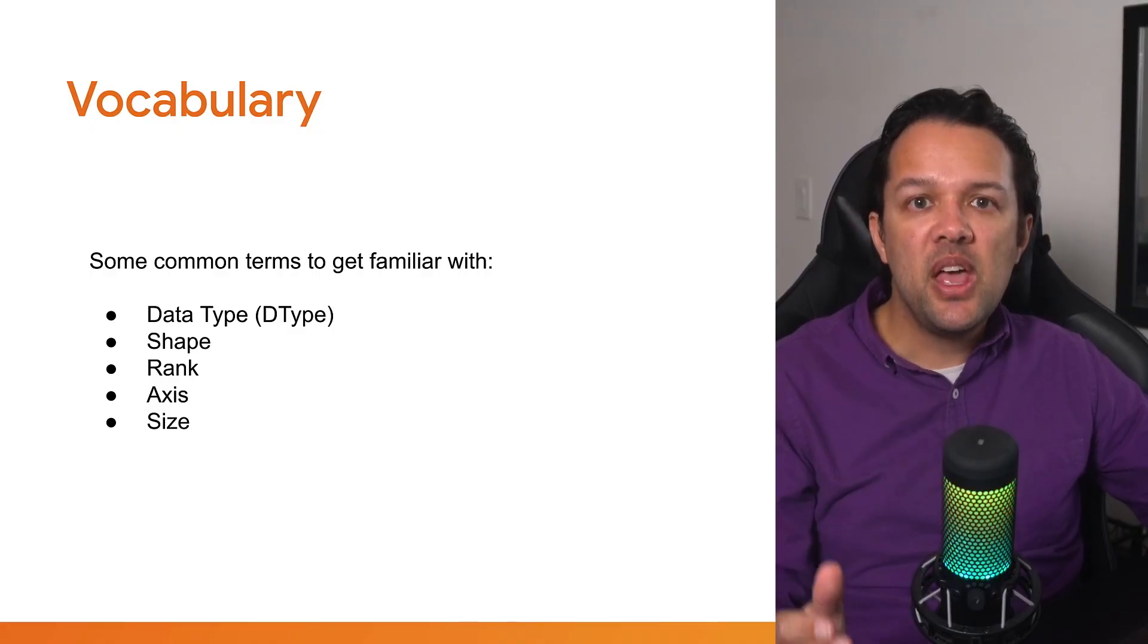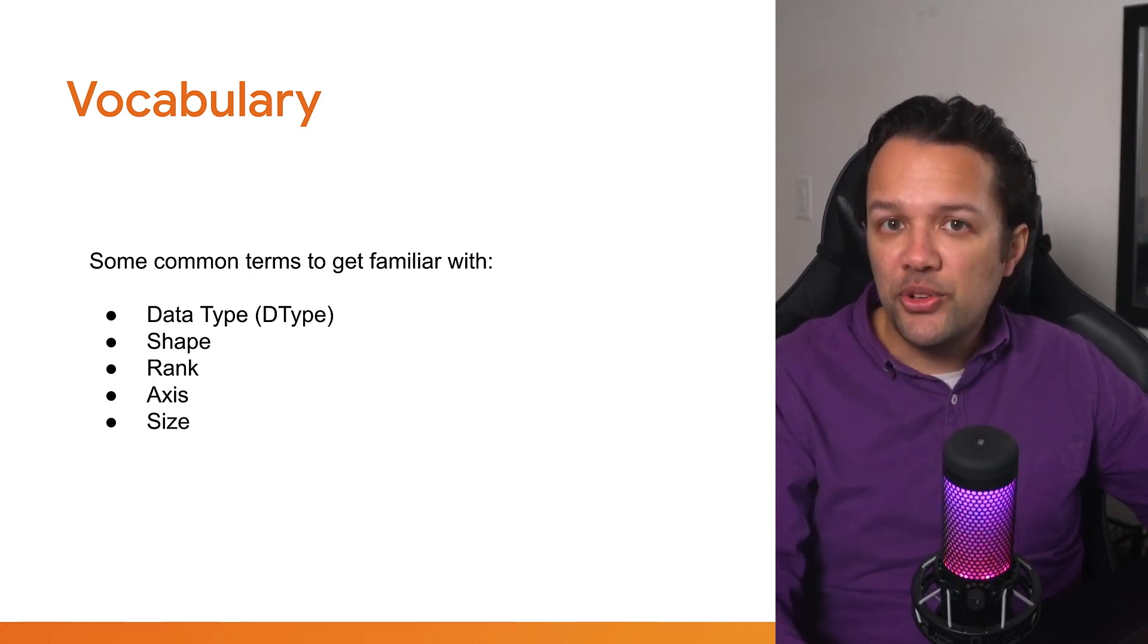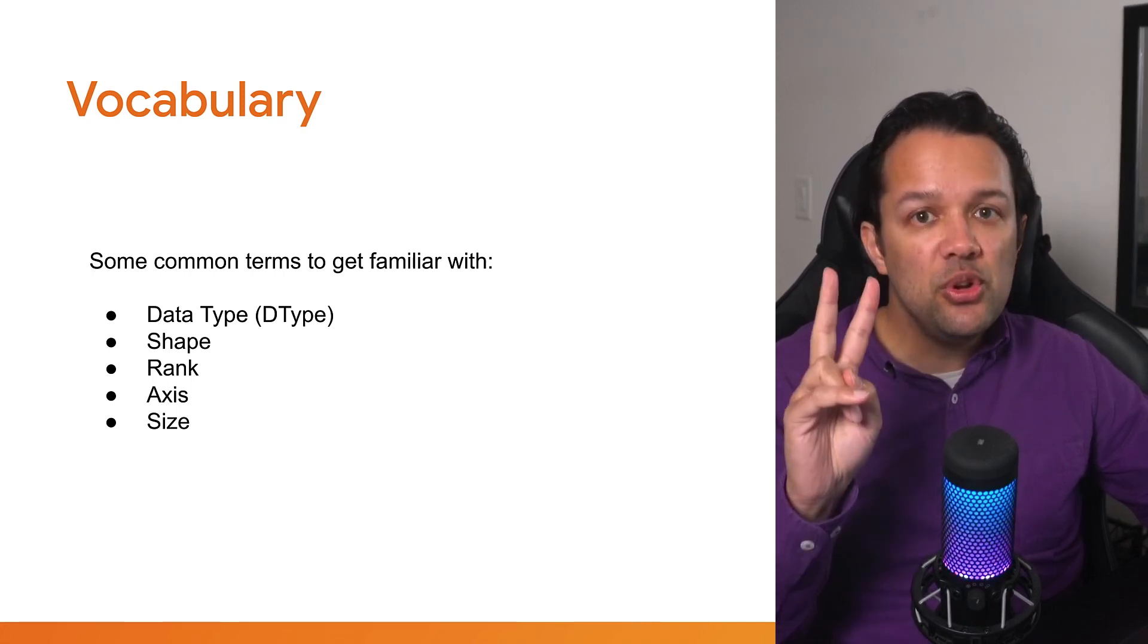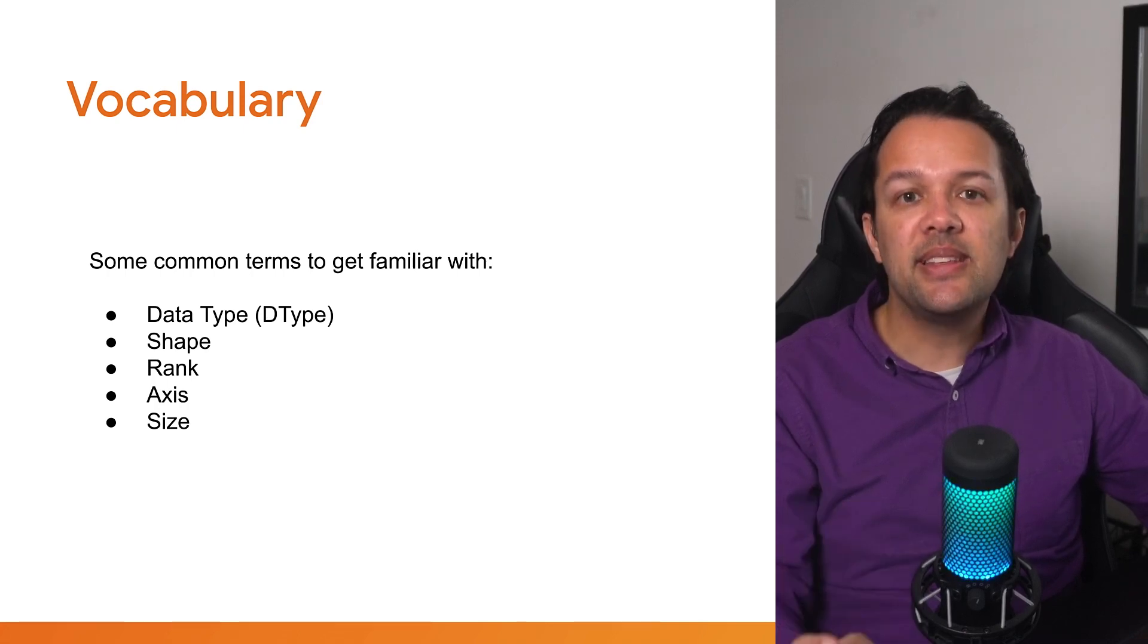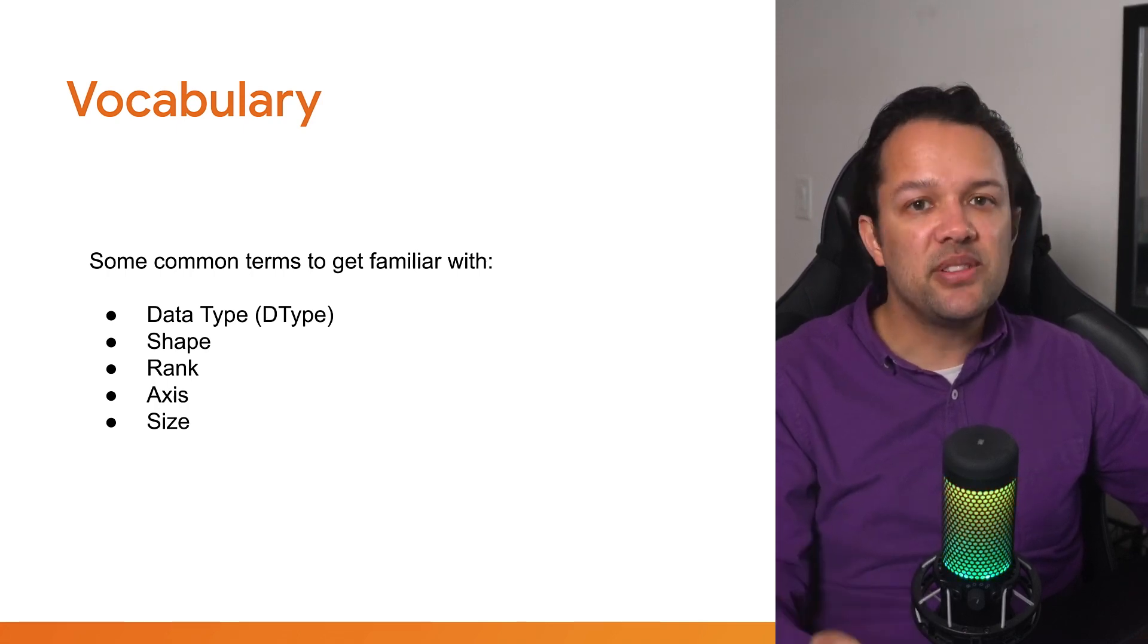Now, when working with tensors, there's some common vocabulary you'll hear folk often referring to. Most importantly, all tensors have two fundamental properties: data type and shape. So let's dive into the details.